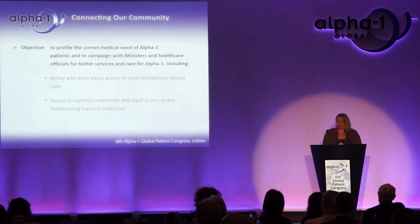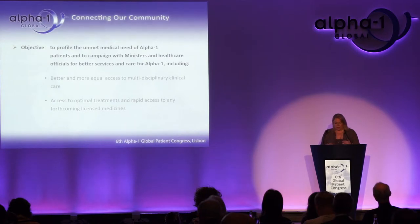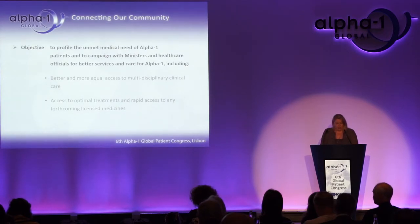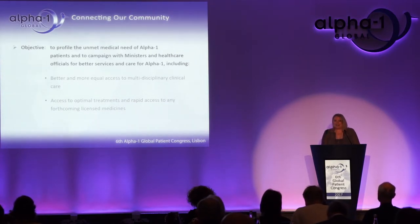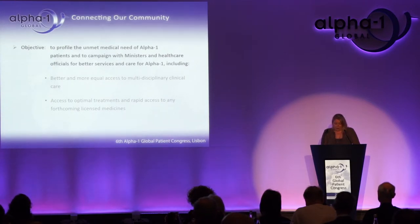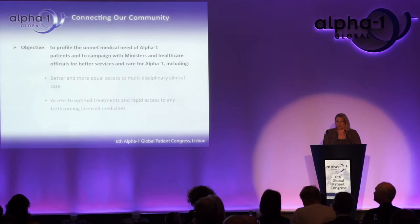You can use the Advocacy One toolkit to help develop your campaign objectives. From the training, patient organizations identified things they thought they could do better: educate and raise awareness among physicians and pediatricians, create a multidisciplinary network of Alpha-1 specialists, extend access to augmentation therapy, increase detection through screening programs, or create a registry.